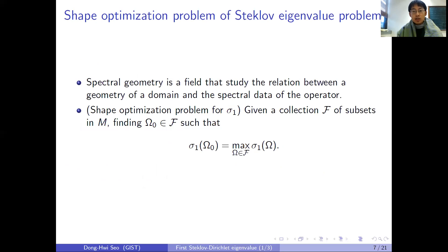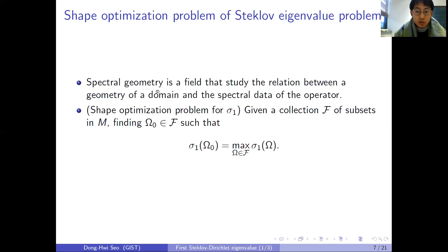A fundamental question is how the geometry of the domain reflects its spectrum. There are many subjects related to spectral geometry, and one of the most classical problems is the shape optimization problem. In this talk, we will only consider the maximization of the first eigenvalue.